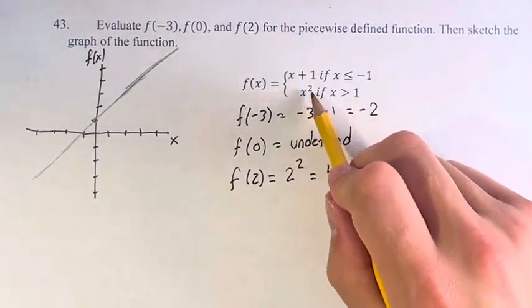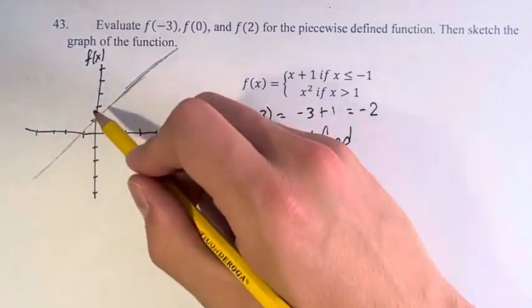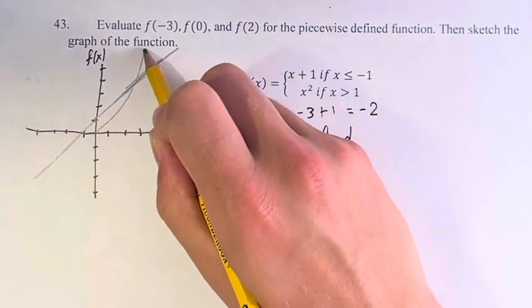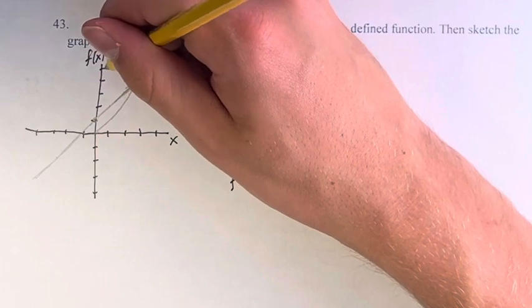And we have y equals x squared. That's just a basic parabola going to look something like this.